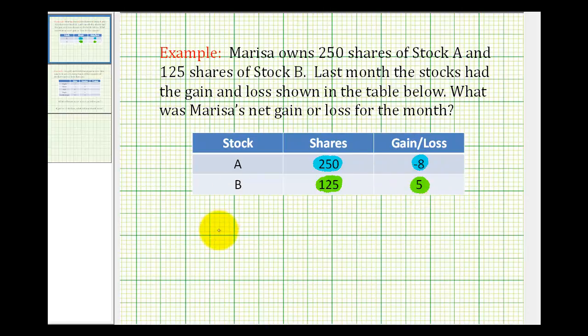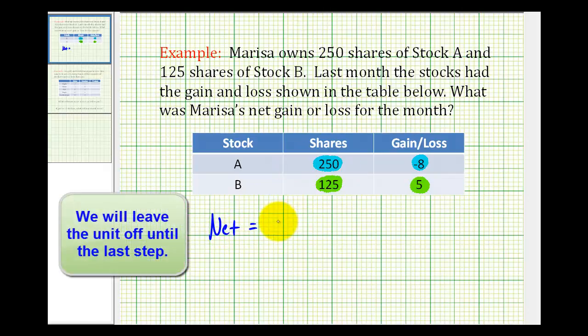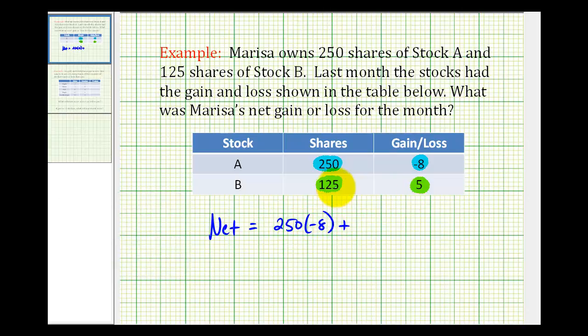So the net gain or loss would be equal to 250 times negative eight plus 125 times positive five.